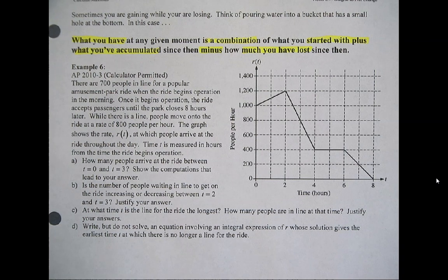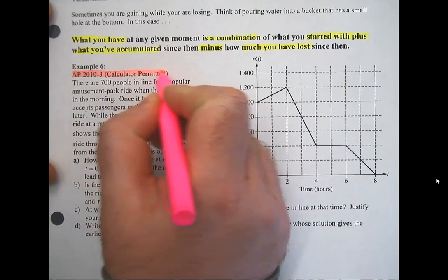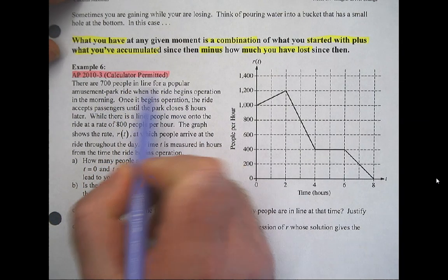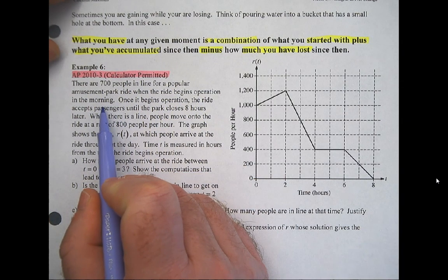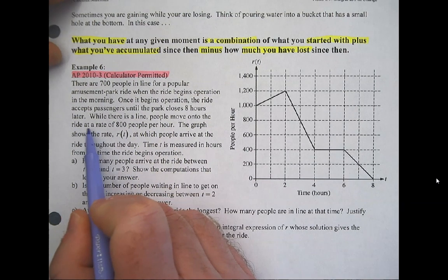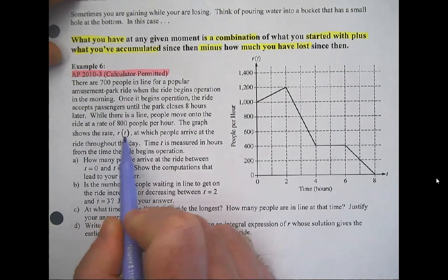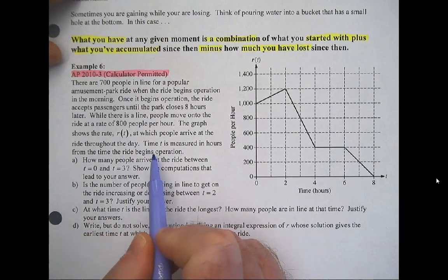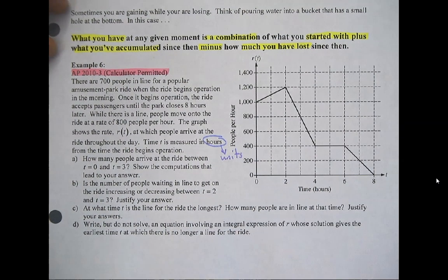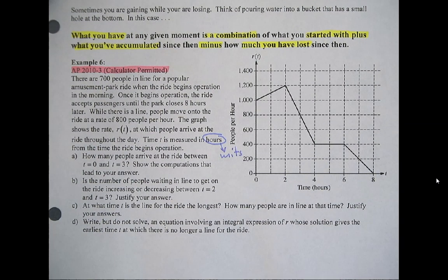As we move on to Example 6, my math voice jumps for joy because I get to use my calculator. Before we attack the question, let's read through and leave notes and reminders about hints they gave us without explicitly stating them. There are 700 people in line for a popular amusement ride when the ride begins operation in the morning. Once it begins, the ride accepts passengers until the park closes eight hours later.